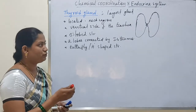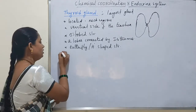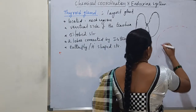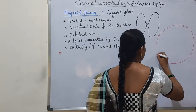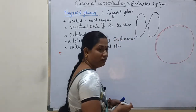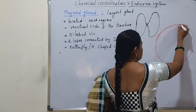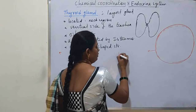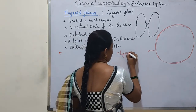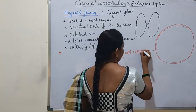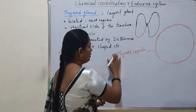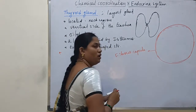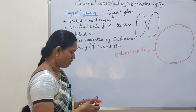Coming to the internal structure of the thyroid gland: when we observe the transverse section, the outer side is lined by a layer called the thyroid capsule, which is a fibrous capsule.